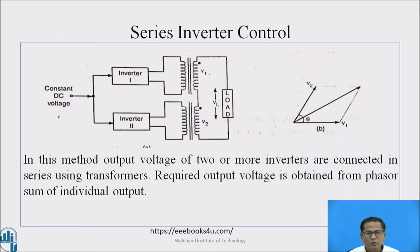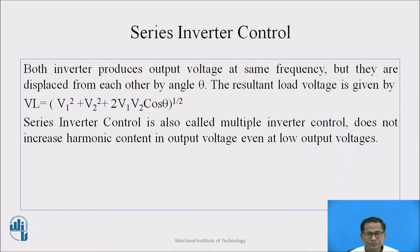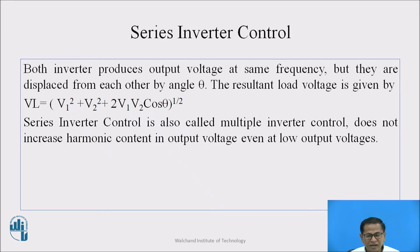In series inverter control, the output voltages of two or more inverters are connected in series with the help of transformers. The required output voltage is obtained from the phasor sum of individual outputs. Both inverters produce output voltage at the same frequency but are displaced from each other by angle theta. The resultant load voltage is given by VL = √(V1² + V2² + 2·V1·V2·cosθ). Series inverter control is also called multiple inverter control and does not increase the harmonic content in the output voltage even at low output voltages.